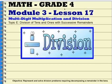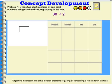Let's take a look at Math, Grade 4, Module 3, Lesson 17, Multi-Digit Multiplication and Division, Topic E, Division of Tens and Ones with Successive Remainders. Problem 1: Divide two-digit numbers by one-digit numbers using number disks, regrouping in the tens.